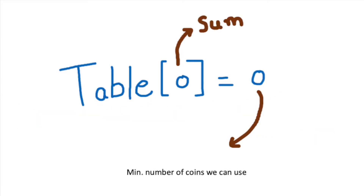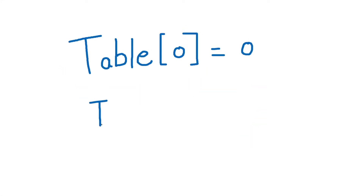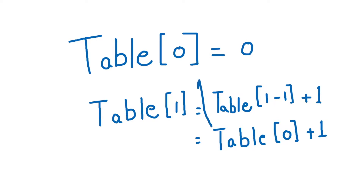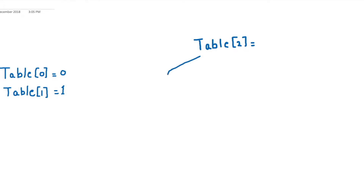For table[0], the value is 0 — zero coins are needed to make sum 0. For table[1], it will be table[1 - 1] + 1 = table[0] + 1, using only coin denomination 1, since coin denomination 2 has a value greater than the sum. For table[2], we have two options: we can use coin 1 or coin 2, and we choose whichever gives the minimum. We use the previously calculated result for table[1], which is the minimum coins for sum 1.